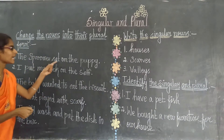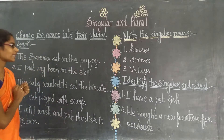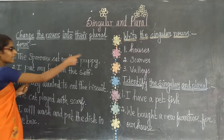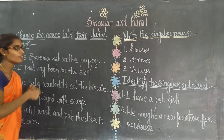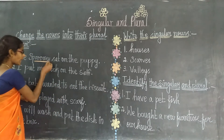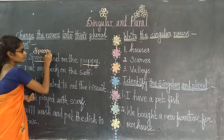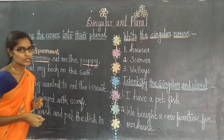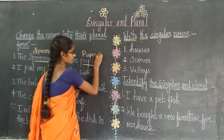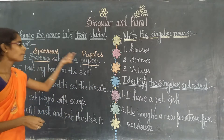The first sentence is: 'The sparrow sat on the puppy.' In this sentence, sparrow and puppy are the nouns. We are going to write the plural form for both. Sparrow changes to sparrows, and puppy changes to puppies.